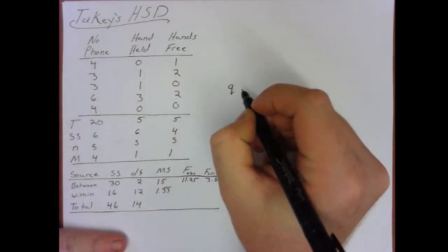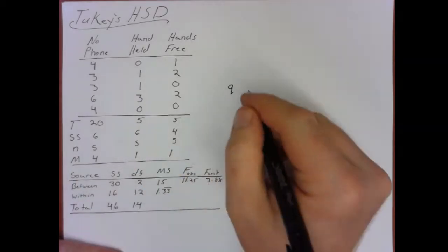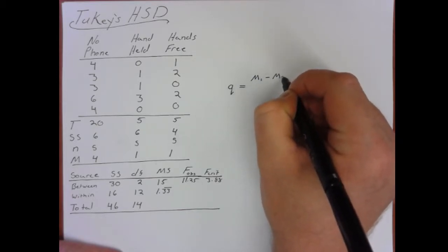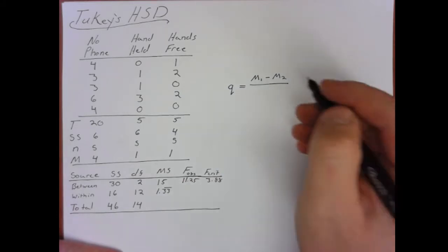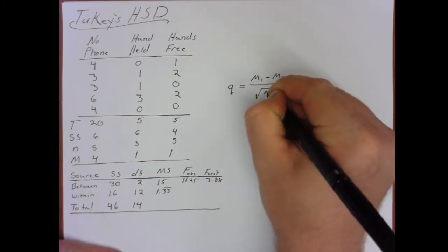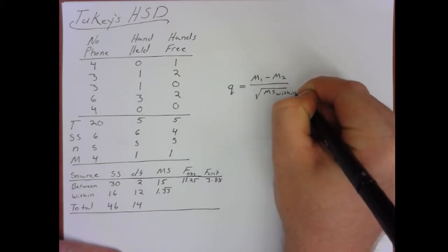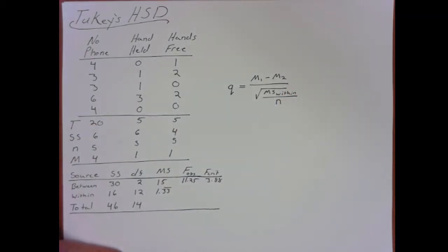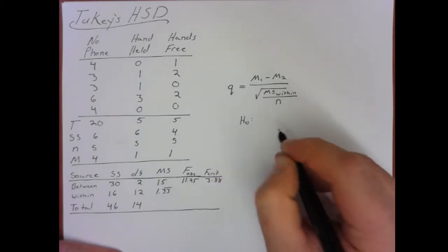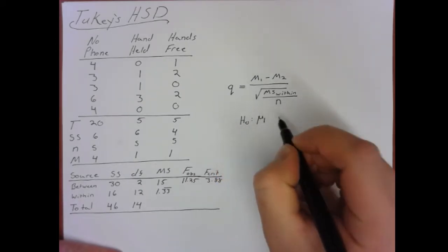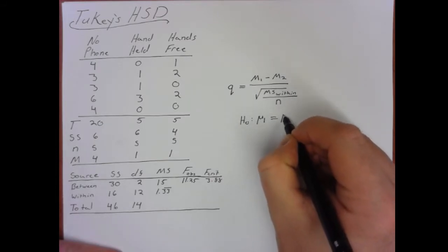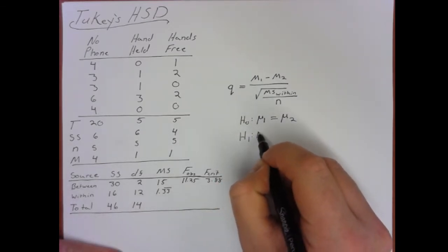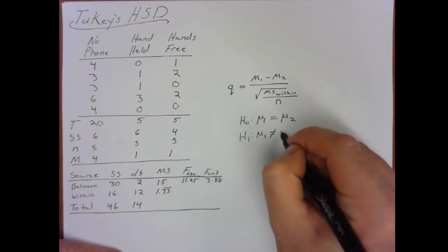Q is the letter given for Tukey's HSD. The test statistic is the mean of sample 1 minus the mean of sample 2, divided by the square root of MS within from our ANOVA divided by the sample size. The null hypothesis states that the population mean that sample 1 came from equals the population mean that sample 2 came from, and the alternative hypothesis says they are not equal.